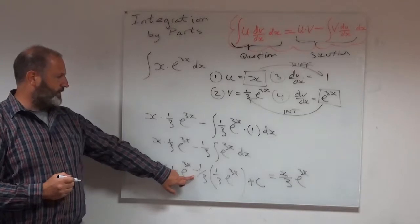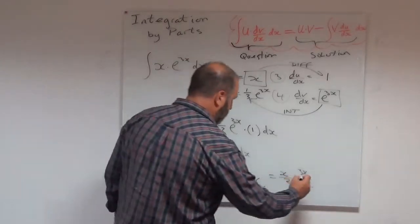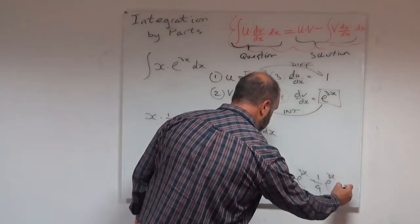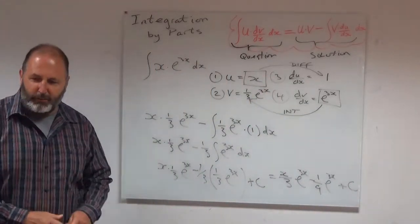And then I've got minus a third times a third. Well, minus 1 times 1 is minus 1 over 3 times 3. So I get minus 1 over 9 e to the 3x plus c. And I think I would stop there.